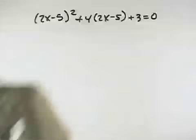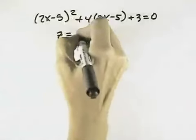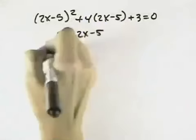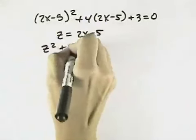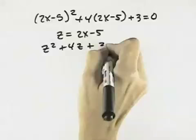Solve this equation by making an appropriate substitution. Well, if I let z equal 2x minus 5, I can write this as z squared plus 4z plus 3 equals 0.